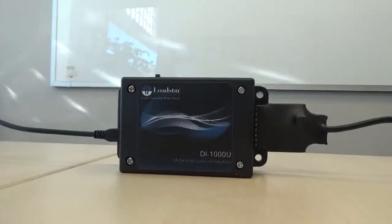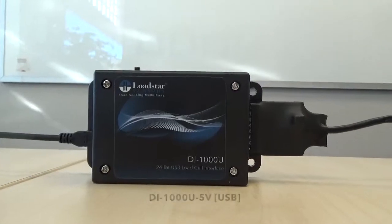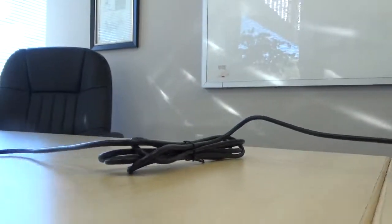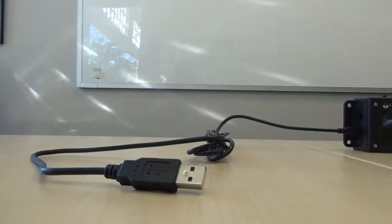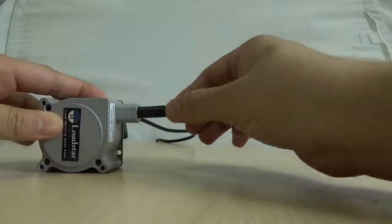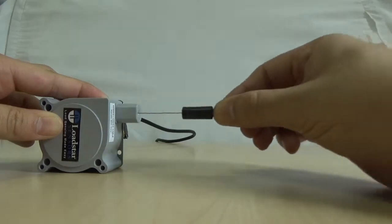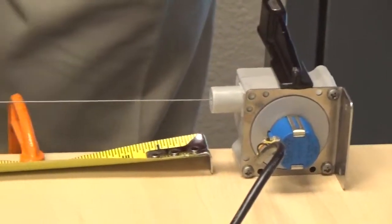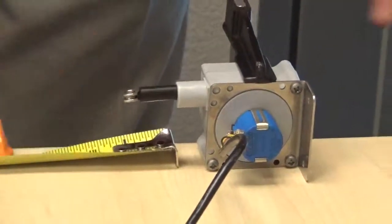We call it the ISP, an intelligent string pot displacement sensor, which is right here. It's called a string pot because there's a little string here connected to this hook. If you attach something to this hook and pull on it, it becomes a displacement sensor.